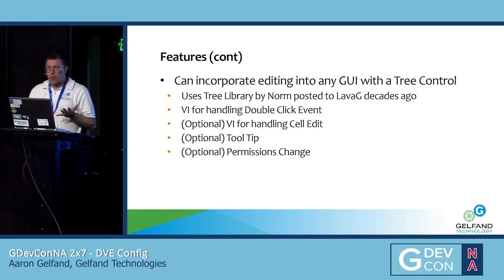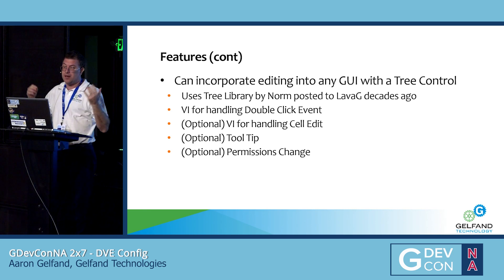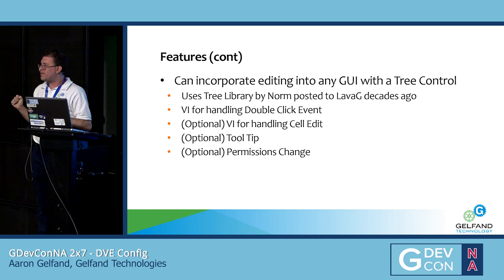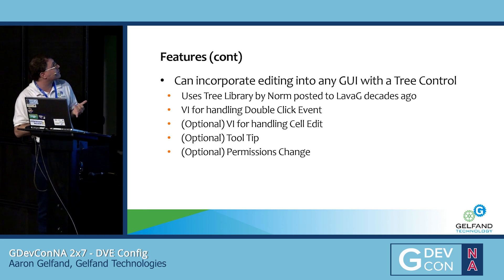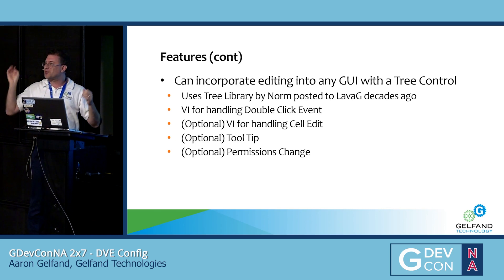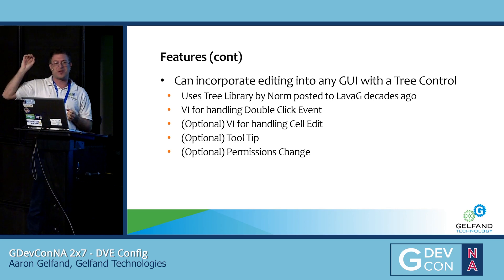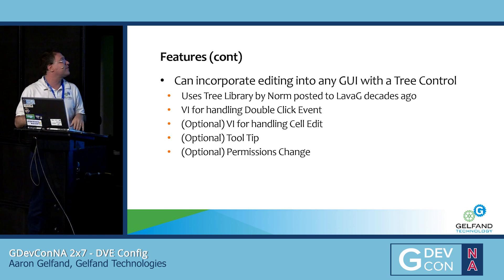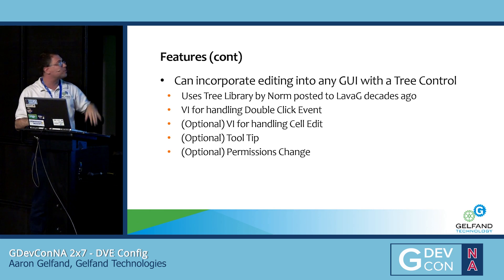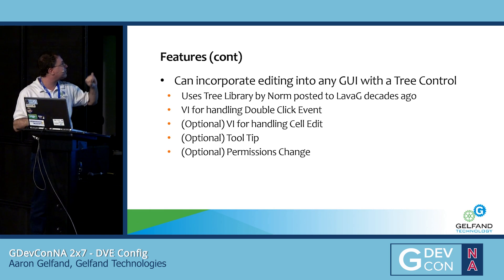For reuse, all I have to do is drop a tree control, and in my event structure, at a minimum, I have to handle one event case — optionally I can handle several more. I used the tree library that Norm posted on LabVIEW-G when it was still OpenG, when there was still the OpenG commander and VIPMs were not nearly as in use. I actually built that into my own personal VIPM to make it easier to deploy across my different VMs.